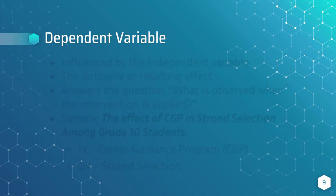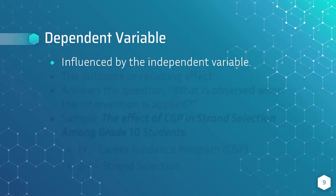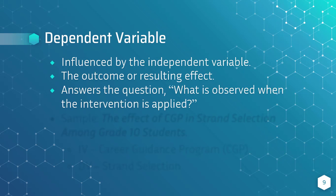Dependent variable. This is the variable influenced by the independent variable. It is usually called the outcome or resulting effect from the intervention or stimulation. It answers the question: what is observed when the intervention is applied? This is also chosen as a variable in a study, depending on the phenomena or specific question the researcher is trying to observe or answer.